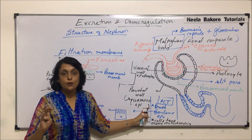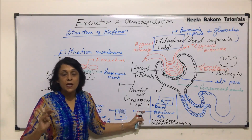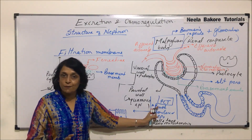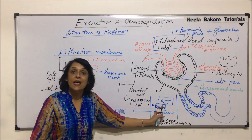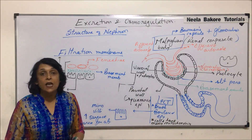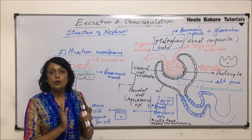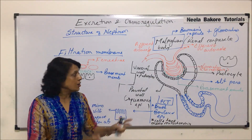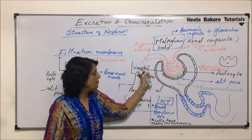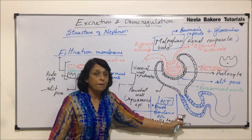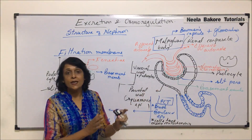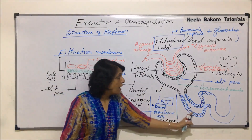Glucose, 100%. Amino acids, 100%. Sodium and potassium ions, about 70 to 75% — they get absorbed here in PCT. This part, PCT, also remains in the cortex region. So Bowman's capsule or the complete Malpighian body, and PCT — these two parts are in the cortex region.